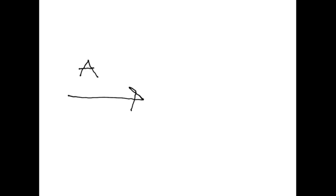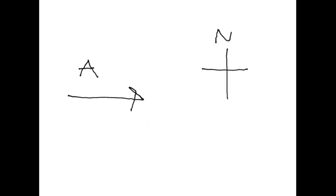The direction of a vector is just like it says — it's the direction at which it points. For example, if you have a vector designated as vector A, and we're using normal compass directions — north, south, east, and west — you can see that this vector A is heading west. That's something easy to know, and that describes the direction of a vector.